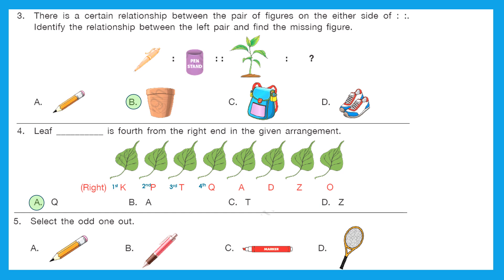Question 5: select the odd one out. It's an easy one because A, B, C are used for writing or coloring or drawing or sketching. But D is a racket. So the odd one out is D.